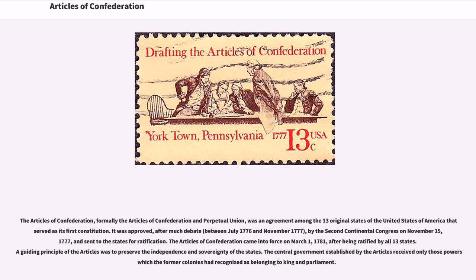The Articles of Confederation, formally the Articles of Confederation and Perpetual Union, was an agreement among the 13 original states of the United States of America that served as its first constitution. It was approved, after much debate, between July 1776 and November 1777, by the Second Continental Congress on November 15, 1777, and sent to the states for ratification.